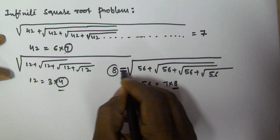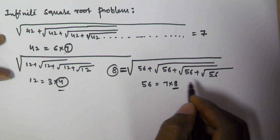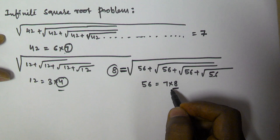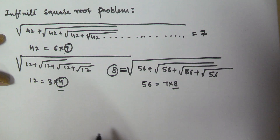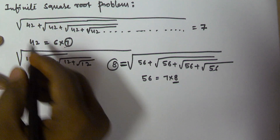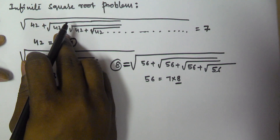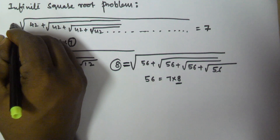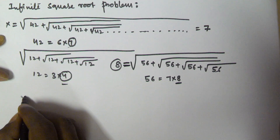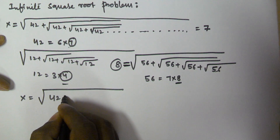But if a number cannot be written as a multiple of two consecutive numbers, how do we solve it? We use the conventional algebraic method. Let us assume under root of 42 plus under root of 42 plus under root of 42 and so on is equal to x. Then the same equation can be written as x equals under root of 42 plus x.